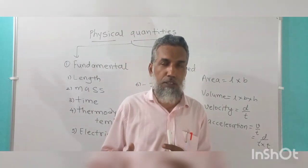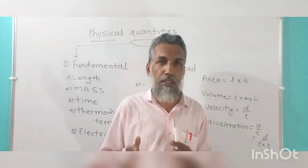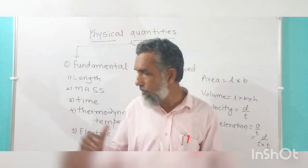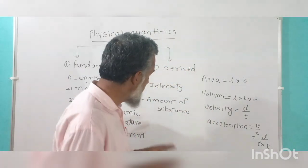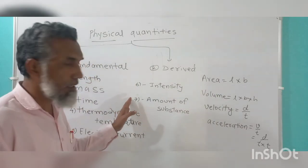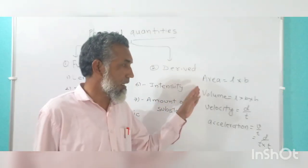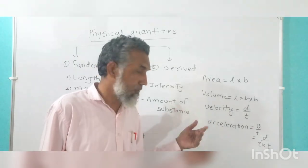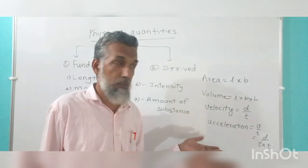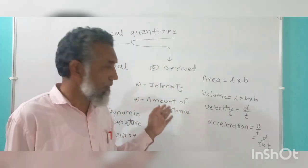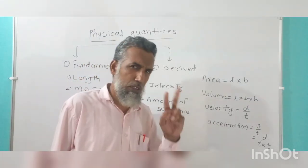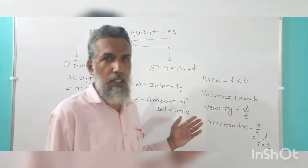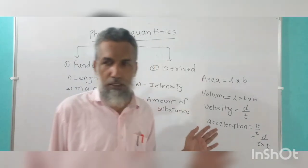So this was the difference between fundamental quantities and derived quantities, with their examples. There are seven fundamental quantities, and additionally two supplementary quantities. There is no fixed number for derived quantities — all quantities beyond the seven fundamental and two supplementary ones are derived quantities.